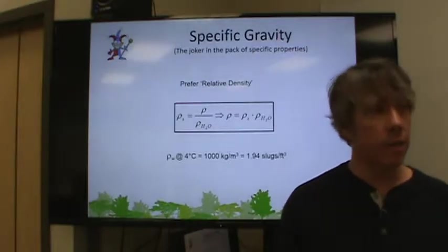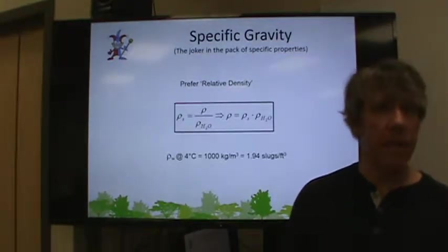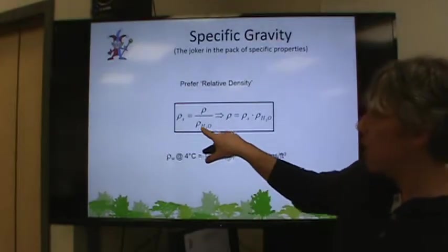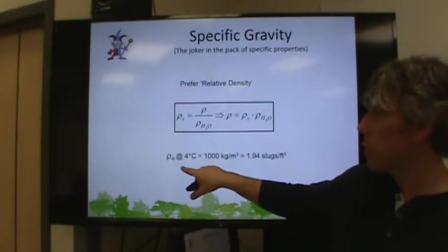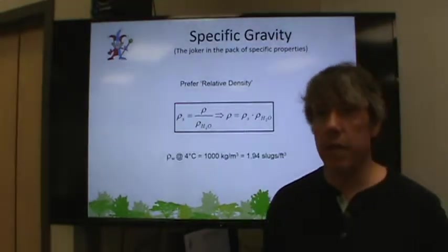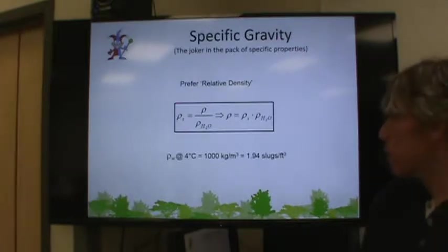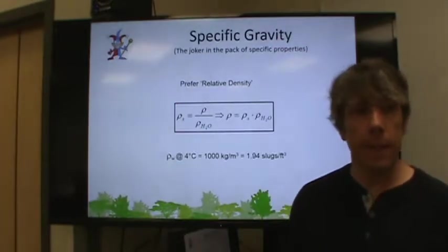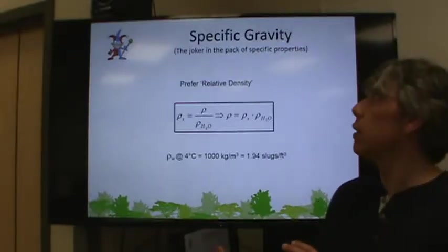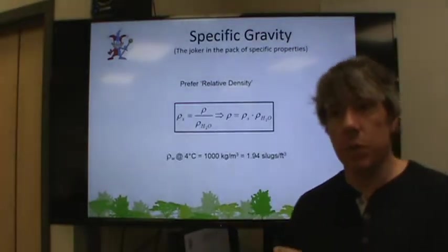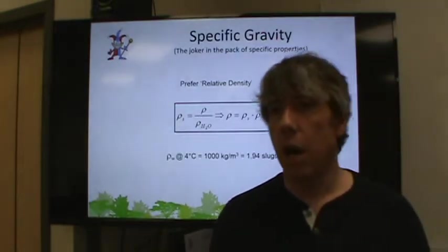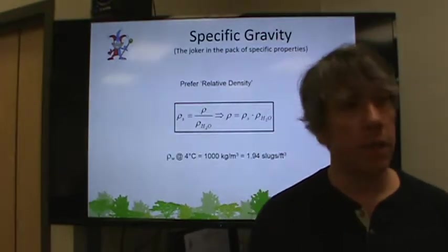I prefer the term relative density, because that's what it really is. Relative density is really just how dense something is versus the density of water. If it has the same density of water, then the specific gravity or the relative density is one. Actually, the density of water varies. It depends on its temperature. In fact, a lot of things depend on temperature.